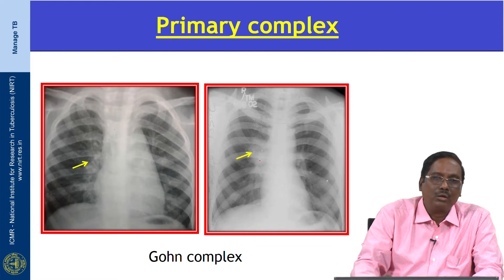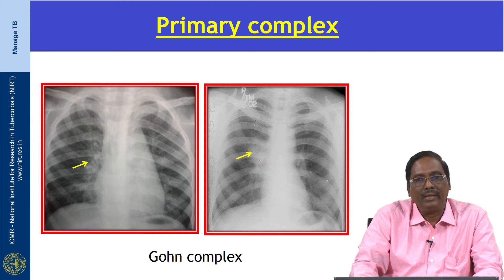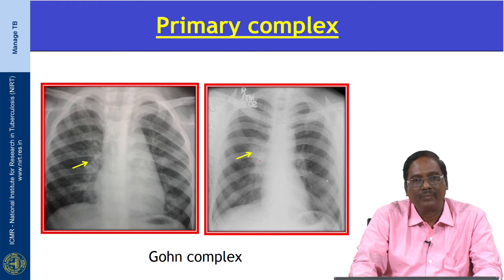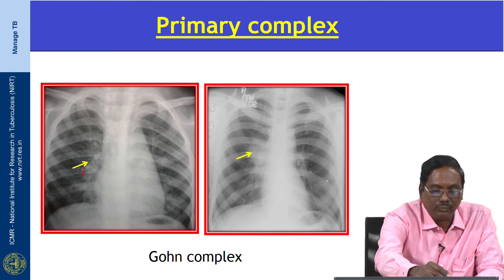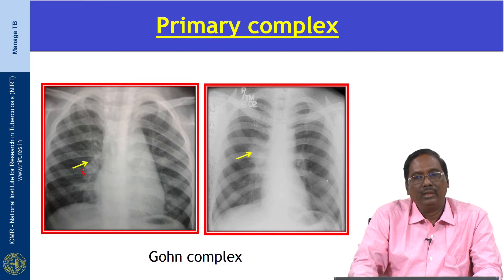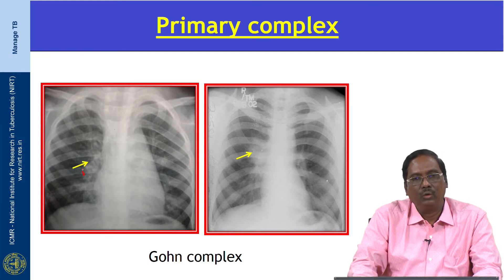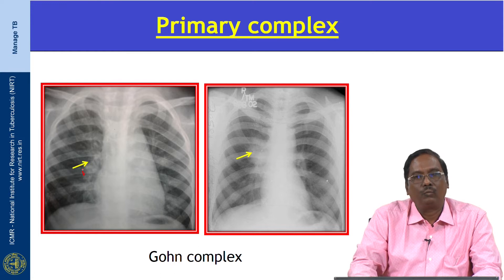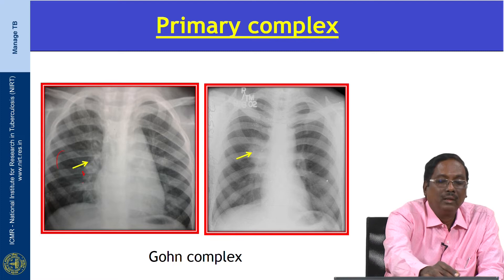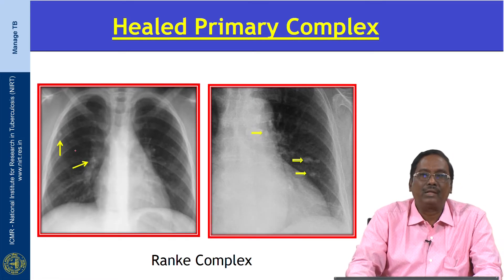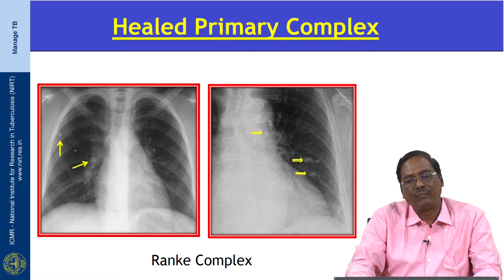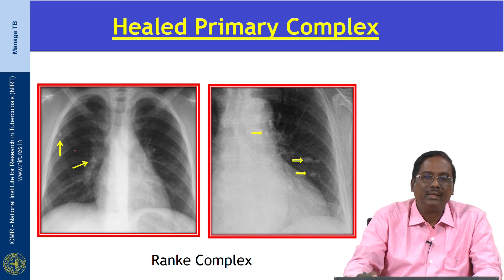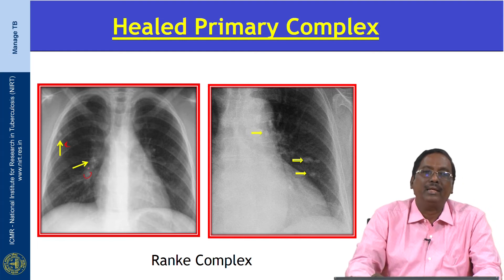The Ghon complex: when tubercle bacilli disseminate from the Ghon focus via lymphatics, they reach the regional hilar node. The node becomes infected and enlarges — this enlarged node is known as the Ghon complex. The primary focus and Ghon complex together constitute the primary complex. In 95 percent of patients, the primary focus and Ghon complex heal either by fibrosis or calcification, and this is called the Ranke focus or Ranke complex.